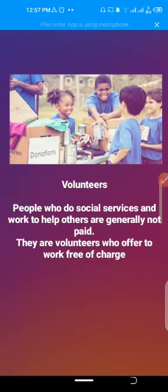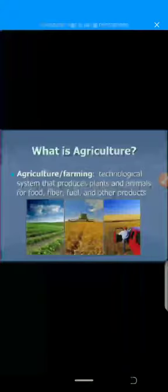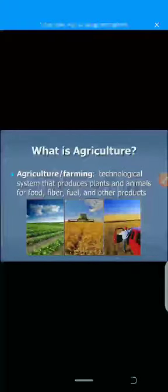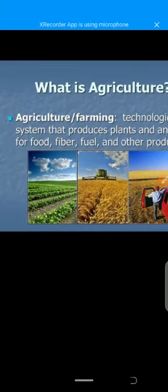Agriculture is also known as farming. It is a technological system that produces plants and animals for food, fiber, fuel, and other products. You can say that agriculture is a term for all kinds of work to do with farming, such as growing crops or caring for animals to provide food, wool, and other products.